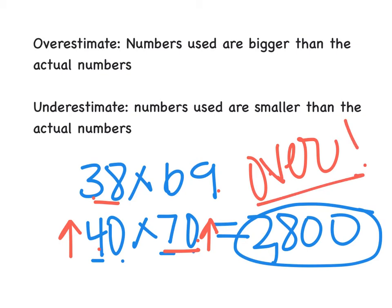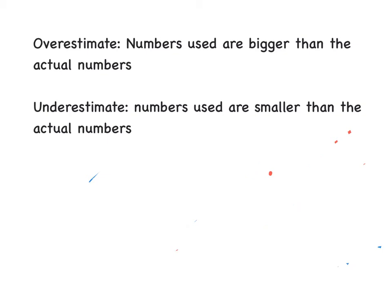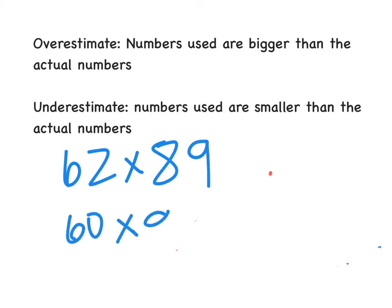Now some people ask, what if you had a problem where you used one number that's bigger and one number that is smaller? So let's say we had the example, 62 times 89. So let's look at that example, 62 times 89.